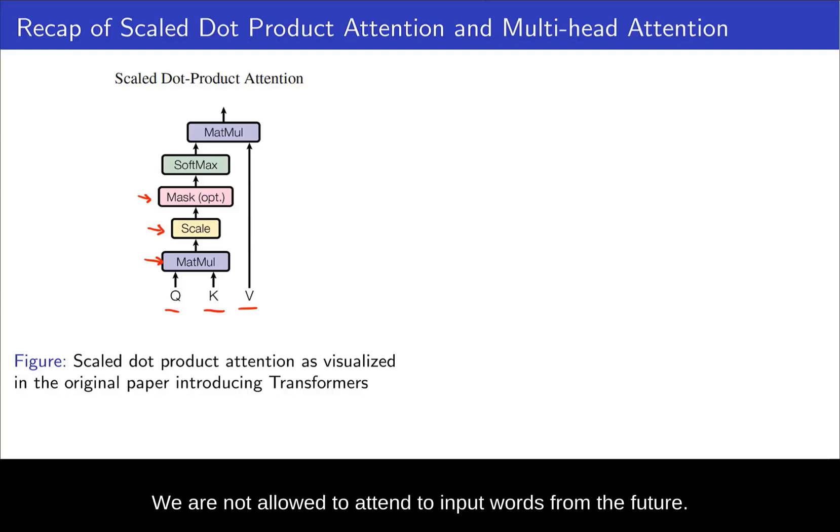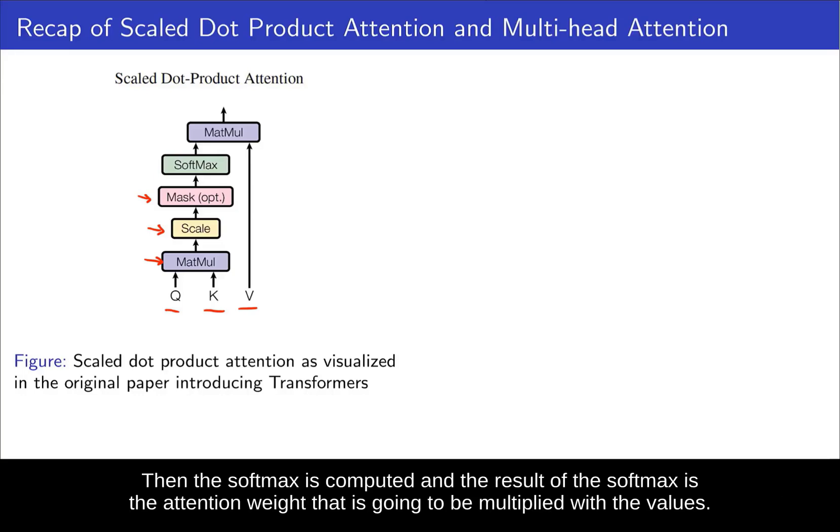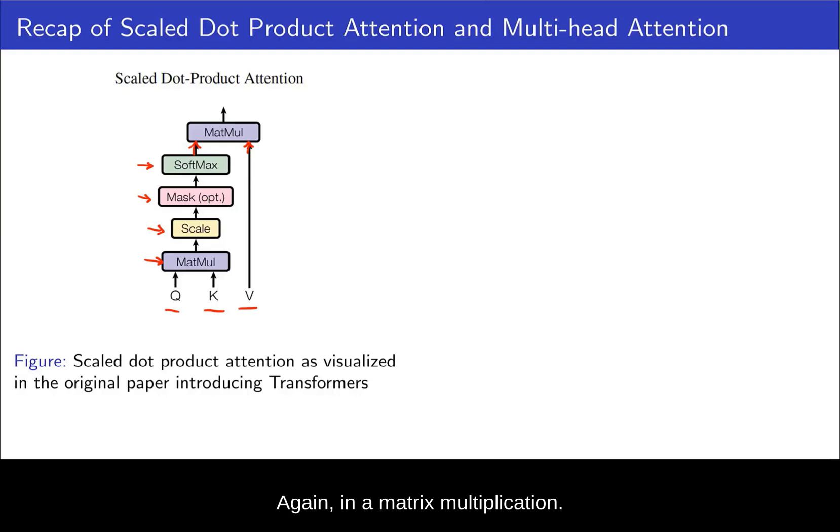So we're not allowed to attend to input words from the future. And therefore, before performing the softmax, these are masked out by minus infinity. Then the softmax is computed and the result of the softmax is the attention weight that is going to be multiplied with the values, again in a matrix multiplication. So this is the concept of scaled dot product attention.